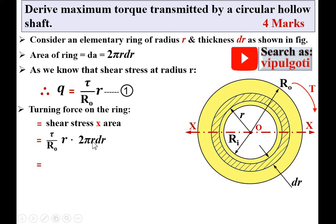So τ/Ro·2π·r²·dr. Let's say this is equation number 2.